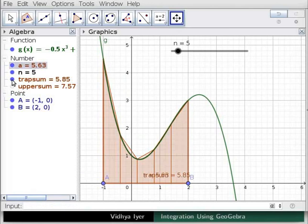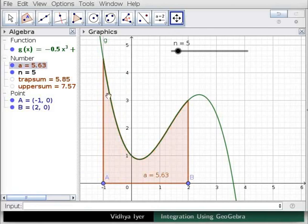In algebra view, uncheck trapsum to hide it in graphics view. For the integral, the curve is the upper bound of the AUC from x equals -1 to 2. In algebra view, uncheck integral A to hide it in graphics view.